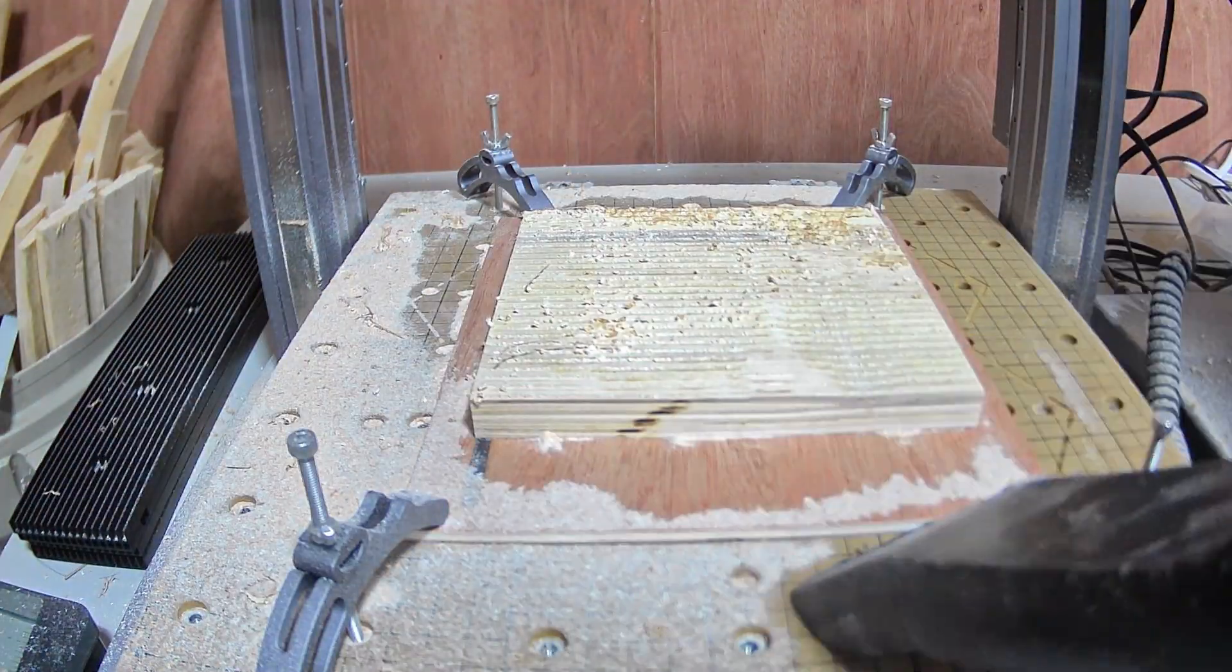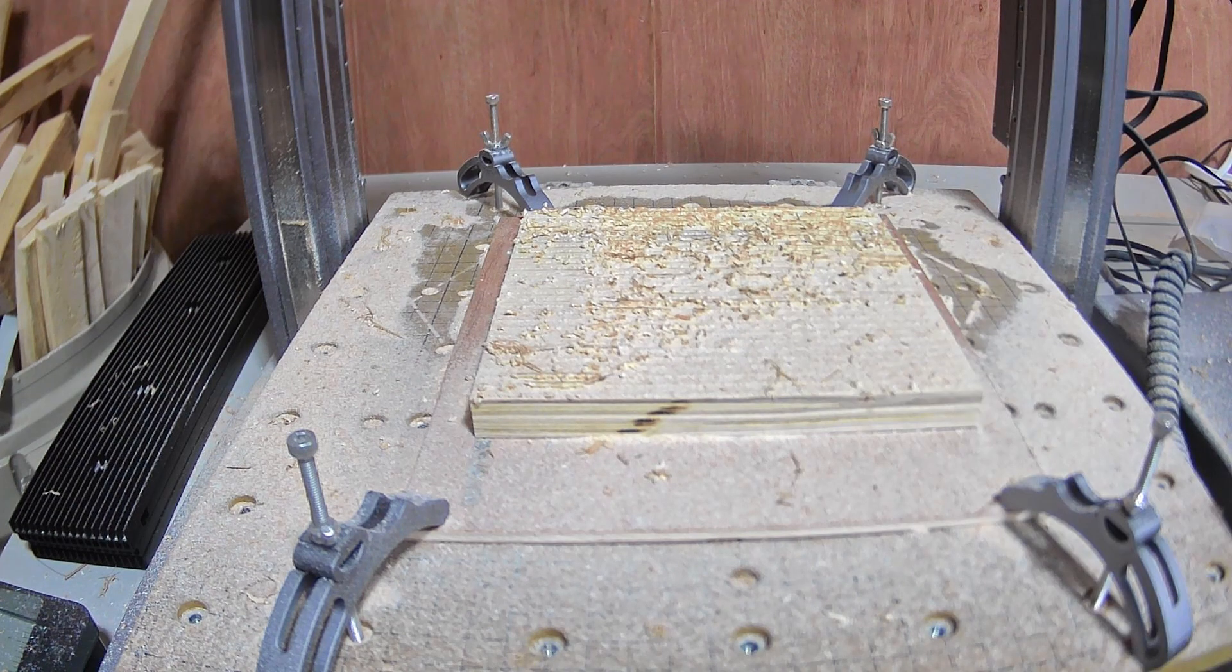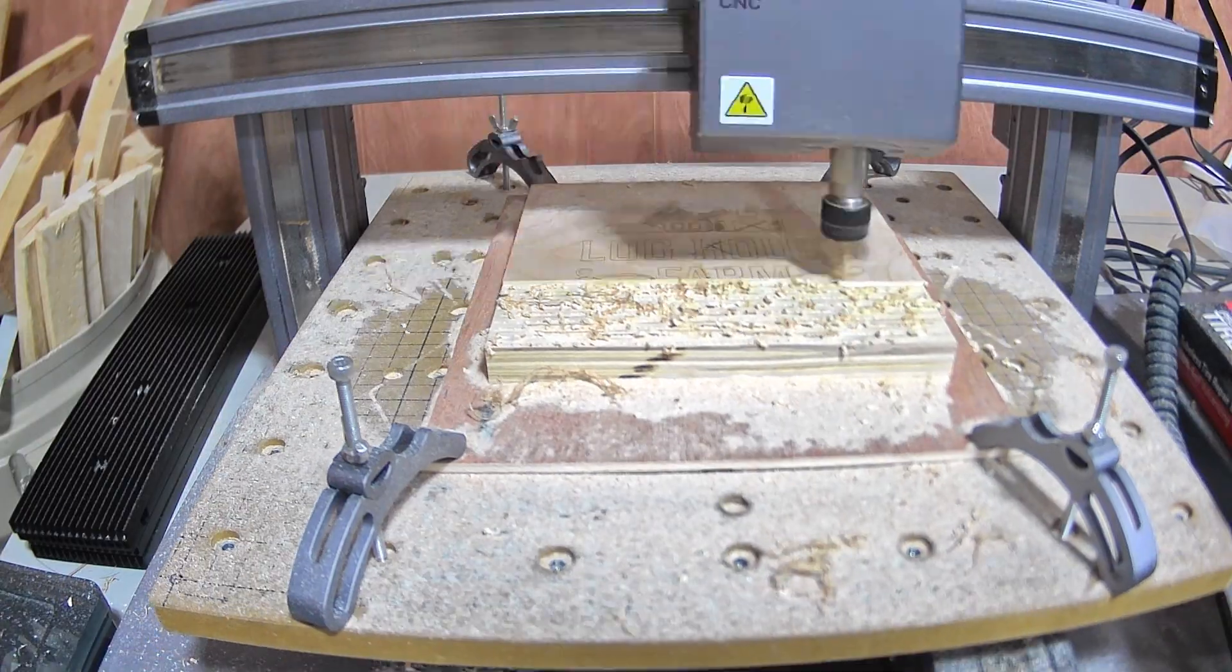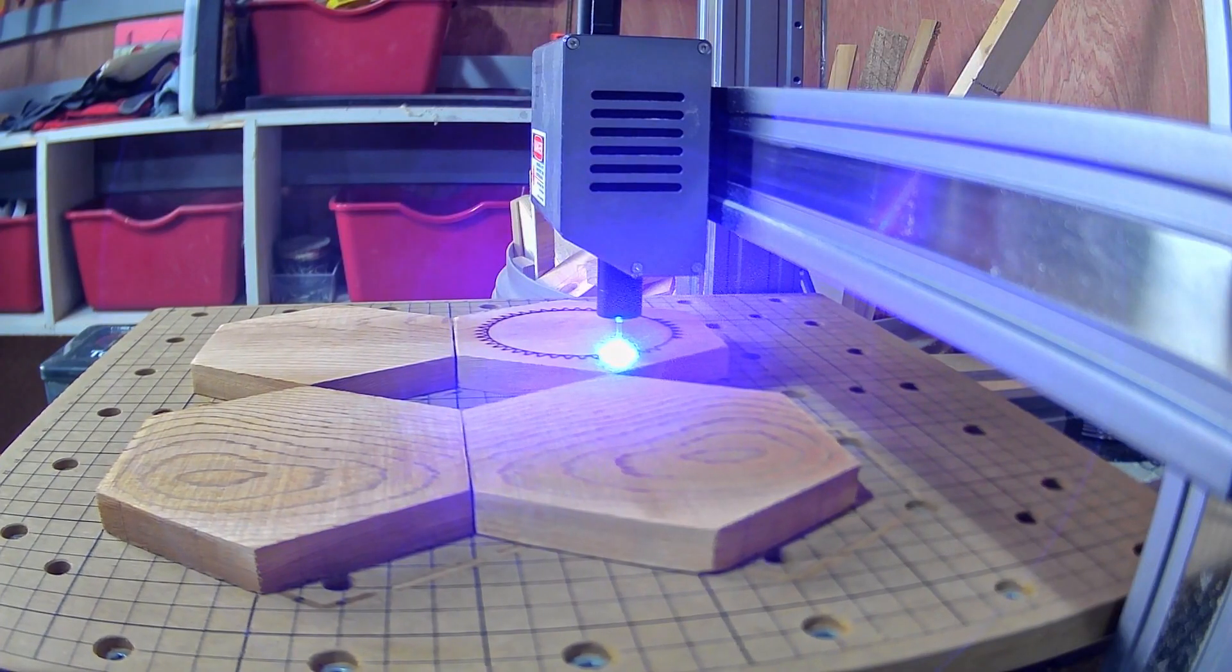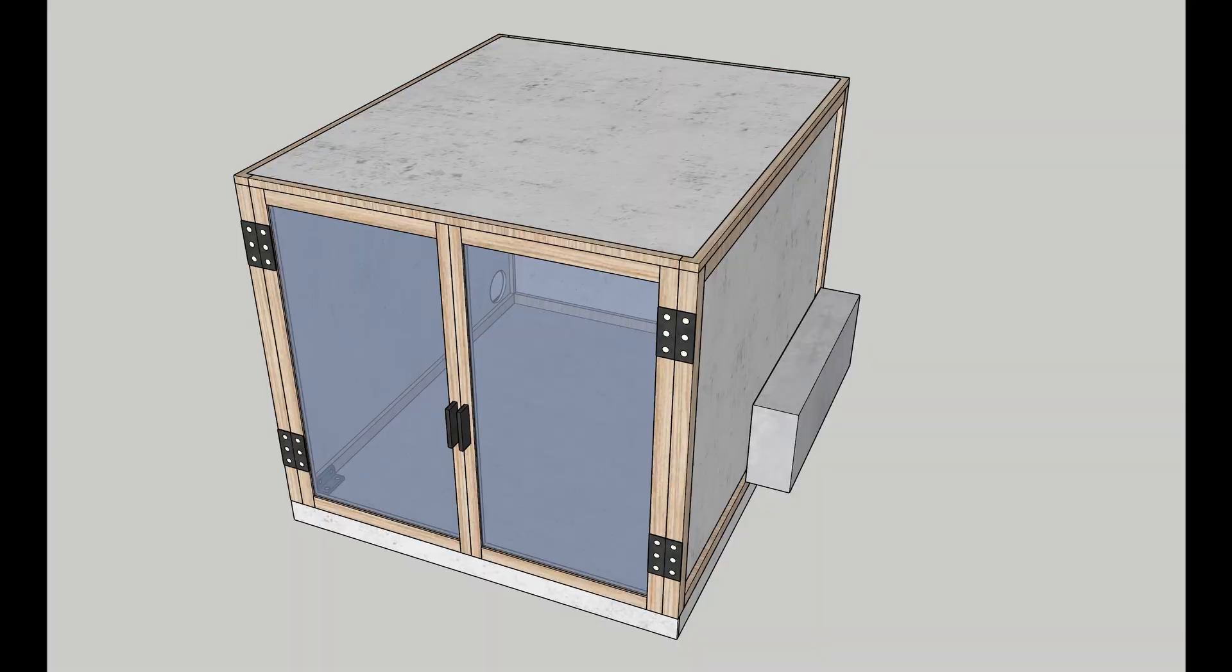After using the Snapmaker for a bit I've realized it really does need an enclosure. You can see how much sawdust it creates when you run the CNC and the laser etcher puts off a fair bit of smoke. So I'm going to make an enclosure that vents outside. Click here to learn more about the Snapmaker.